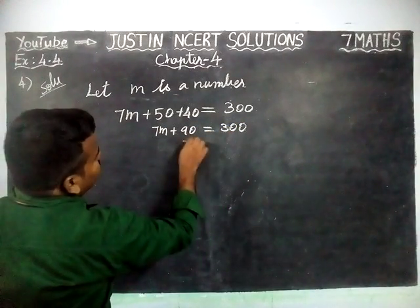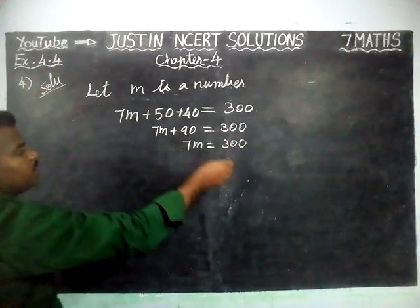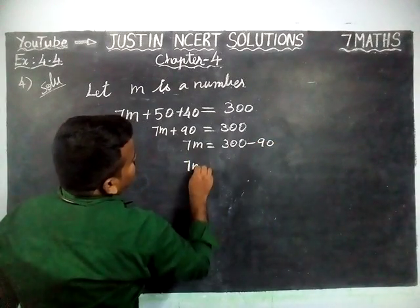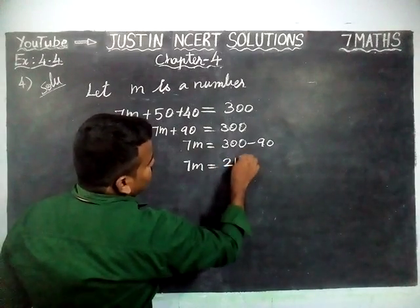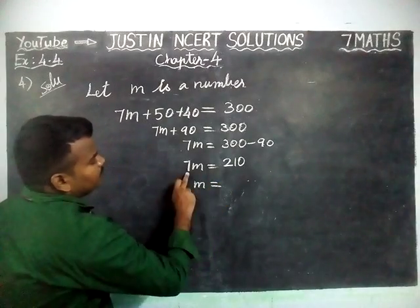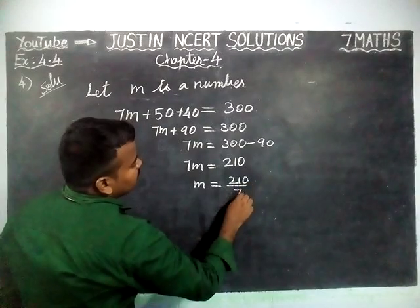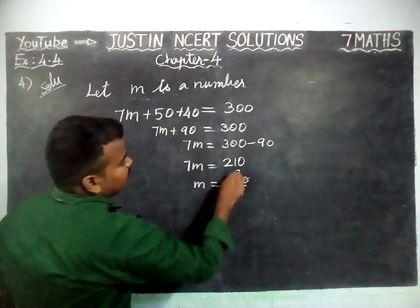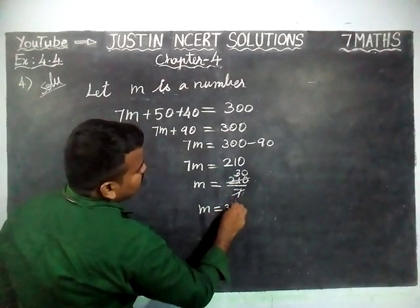Now, 7M + 90 = 300. The 90 goes to the right-hand side as minus 90, so 7M = 300 − 90 = 210. Then M = 210 ÷ 7. Dividing: 1×7 is 7, 3×7 is 21, so M = 30.